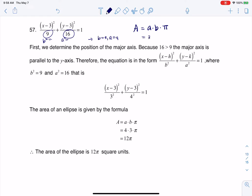And so when I plug that in here, I'm going to have 4 times 3 times pi. So the area of that ellipse is 12 pi.